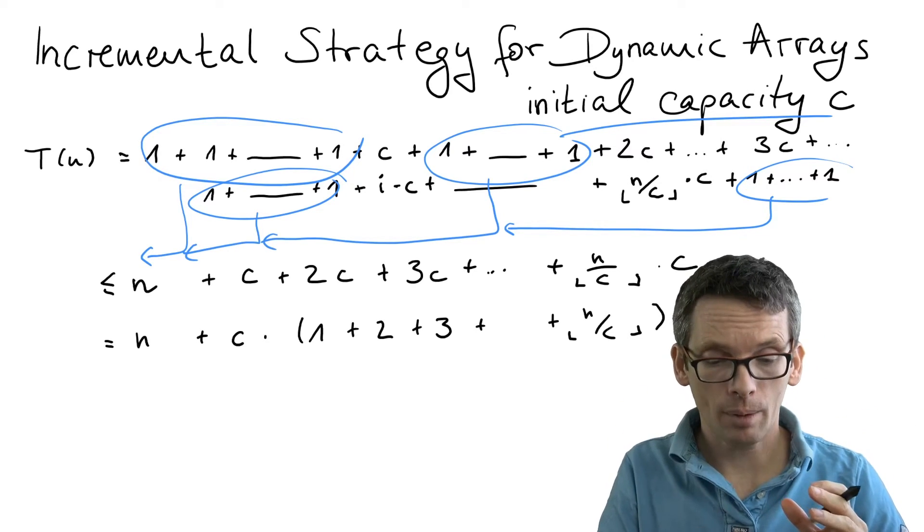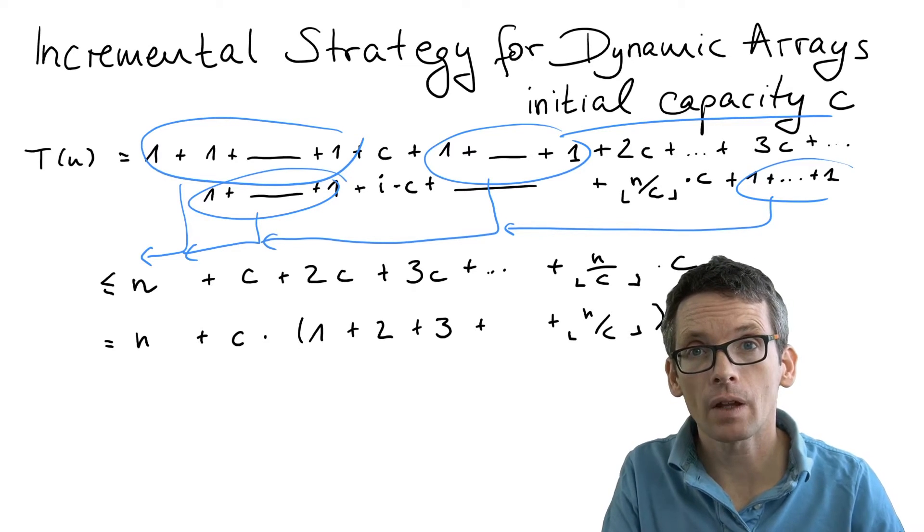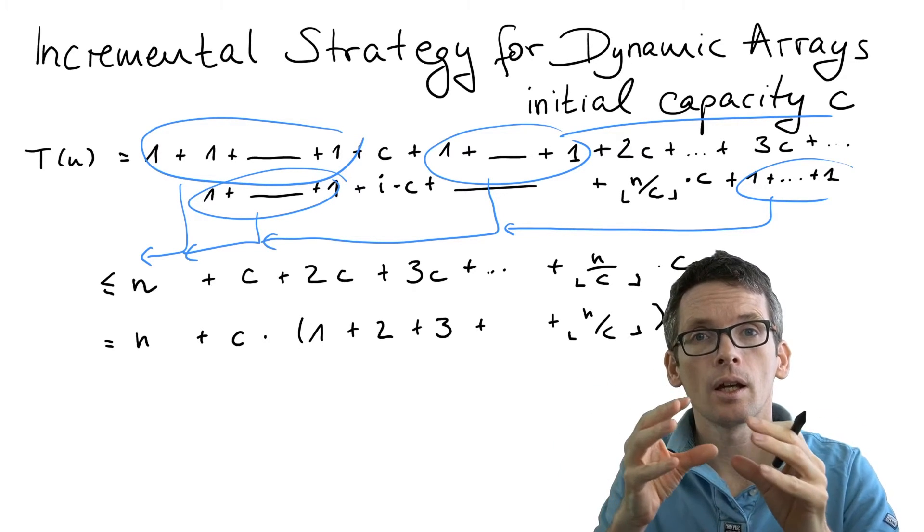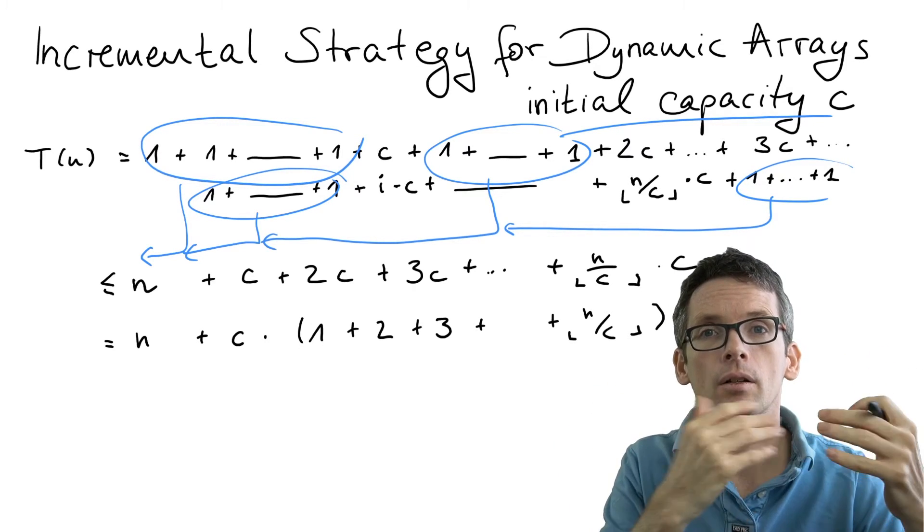If the sum goes up to n divided by c, then it evaluates to (n divided by c) times (n divided by c plus 1) divided by 2.